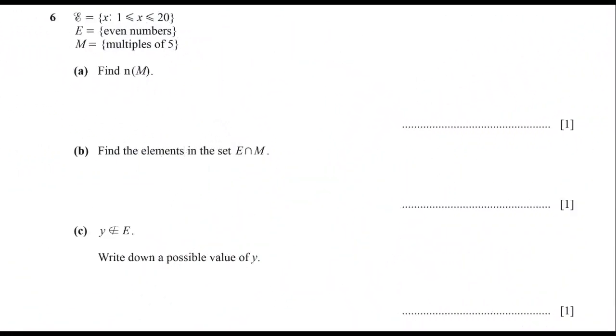Question 6: Even numbers between 1 and 20 are 2, 4, 6, 8, 10, 12, 14, 16, 18, and 20. Multiples of 5 are 5, 10, 15, and 20. Part (a): Find n(M), the number of elements in the set M.